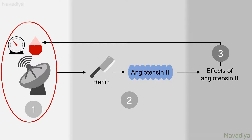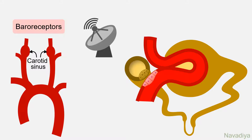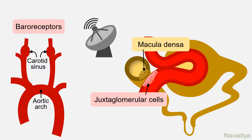Let's first see how the body detects fall in blood pressure and volume. There are three sites for this: baroreceptors at the carotid sinus and aortic arch, and macula densa cells and juxtaglomerular cells of the juxtaglomerular apparatus in the kidney.